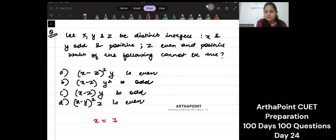So I can take x as 7. y is also odd, so I can take y as 3. z is even, so I can take z as 2. That's it. Now I can go ahead and solve this question much more easily.